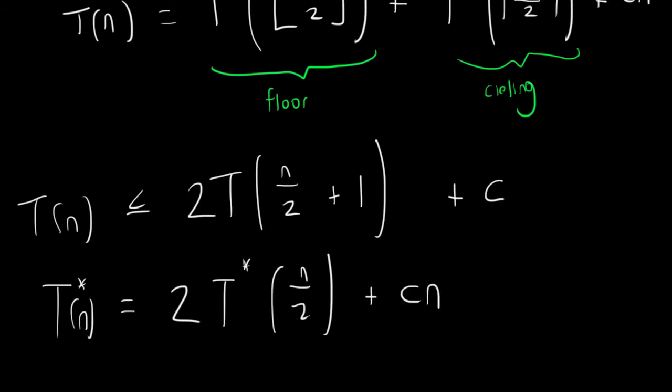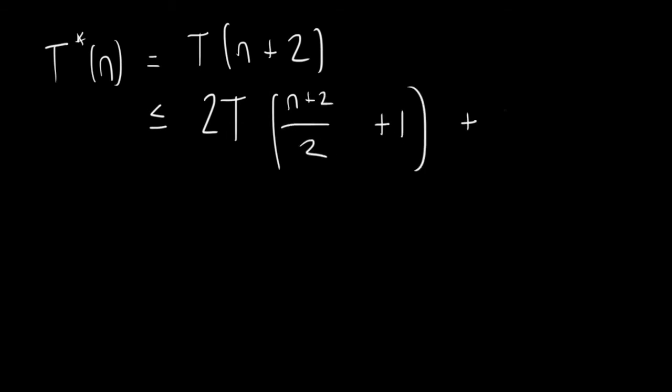So why is it okay to go with both of these definitions? Well, we'll start off by setting T star of n. We'll set that to T(n) plus 2. Now we're going to see how we're going to work our way back over. So we're going to go ahead and say this is less than or equal to. Obviously, we have the T star n on this side. We'll put that as 2T(n plus 2 over 2) plus 1. And that will have a constant. We'll put a c prime there just to differentiate them for now.